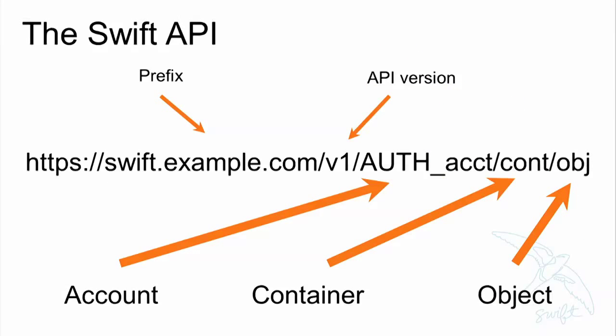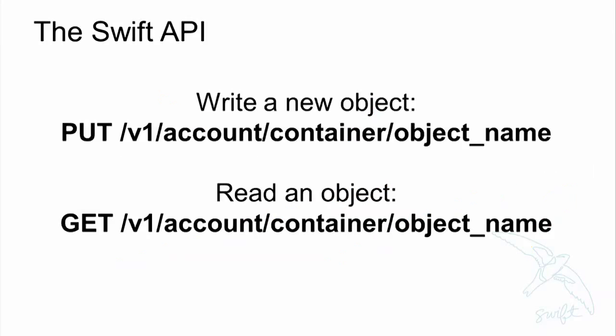What is the Swift API? It has a REST API. A Swift API request URL has a few key parts: the account, the container, and the object. The account keeps a list of containers; containers keep a list of objects. Both keep a little aggregated metadata, and the object is where your data is actually stored. When you write a new object, you send an HTTP PUT to your object name and get back an HTTP response code. When you want to get the object, you send a GET and get back 200 with your data. That's the API.